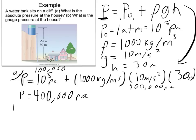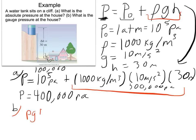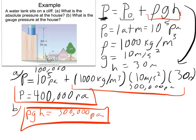That's Part A. Part B: what is the gauge pressure at the house? We've actually already found this. The rho G H term is the gauge pressure — remember that from yesterday. We already calculated rho G H to be 300,000 pascals. So the gauge pressure is 300,000 pascals.